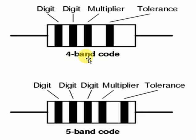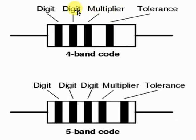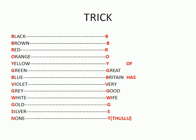Now let's talk about the trick to memorize the colors. The colors are black, brown, red, orange, yellow, green, blue, violet, gray, white, gold, silver, and none. Remove gold, silver, and none from the main sequence — the remaining 10 colors go from 0 to 9. The mnemonic is: there is a man called BB Roy.